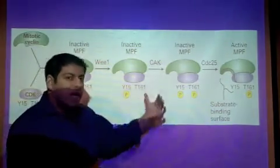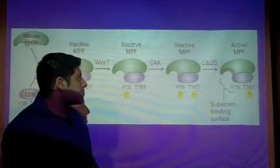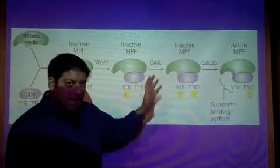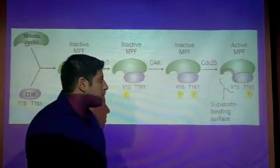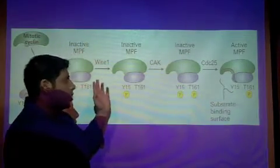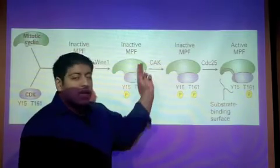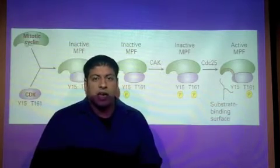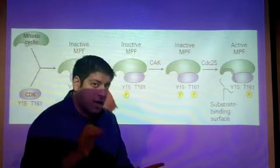Next we have another kinase called CAK, the cyclin-activating kinase or cyclin-dependent activating kinase. CAK is going to phosphorylate the T161, the threonine 161. So now at this point we have a phosphate at Y15 courtesy of Wee1, and we now have a phosphate attached to T161 courtesy of the CAK kinase. Having two phosphates attached to CDK, we are still inactive, so there's still no MPF activity.